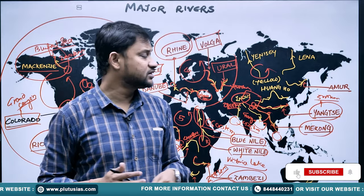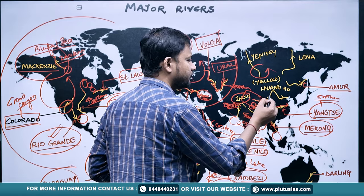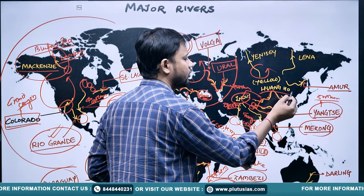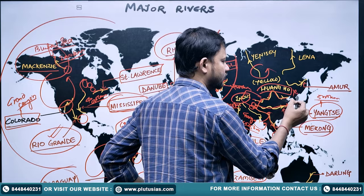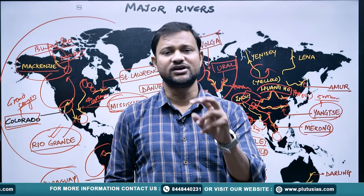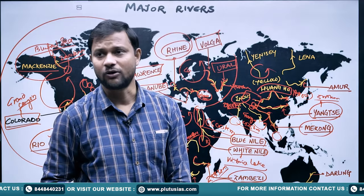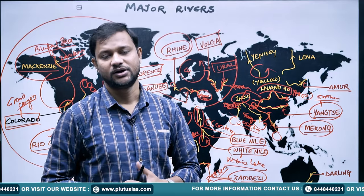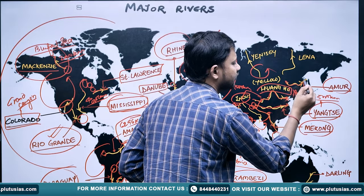The Huang He, also known as the Yellow River or Yango River, is world-famous and drains into the Gulf of Bohai in China. Next is the Amur River, located entirely in the Siberian part of Russia.